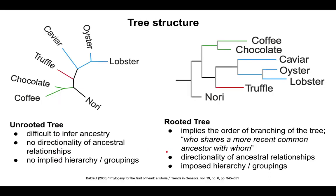Many phylogenies, especially maximum likelihood programs like FastTree, IQ-TREE, and RAxML, often output what's called an unrooted tree. An unrooted tree doesn't provide a sense of directionality — since we're often interested in how character states change over time, when it's unrooted you don't have an inferred directionality of the relationships. Is this the oldest group? Is that the oldest group? I don't know which way to go. So you have no implied hierarchy.